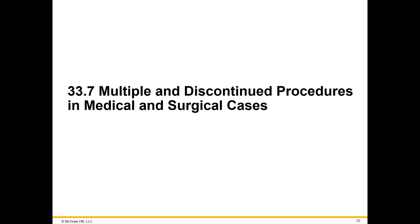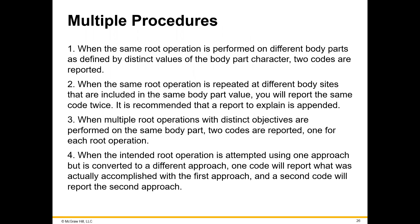Now we get into specific issues about multiple and discontinued procedures. When the same root operation is performed on different body parts, two codes are required. If it's the same root operation repeated at different body sites included in the same body part value, you report the same code twice. Any time there are multiple root operations with distinct objectives, we report two codes. If we have an intended root operation using one approach but convert it to a different approach — for example, doing things endoscopically and deciding to make it an open procedure — one code reports what was accomplished with the first approach and the second code reports the second approach.